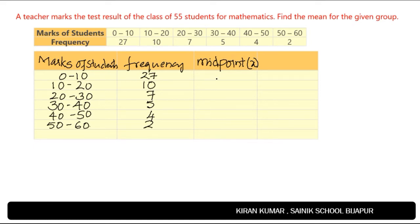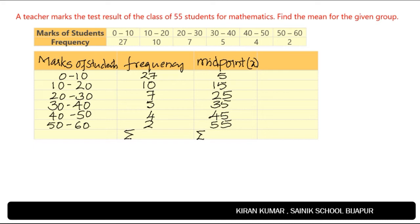The midpoint of the first interval (0 to 10) is 0 + 10 divided by 2, which equals 5. The next midpoint is 15, and each time 10 is added, giving us 5, 15, 25, 35, 45, and 55. The sum of all frequencies, sigma(f), is 55, which confirms the total of 55 students as stated. Now I will multiply each midpoint by its frequency to get f × x.